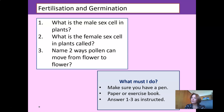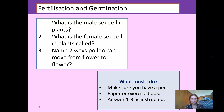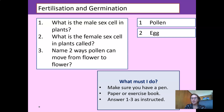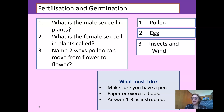Now, if you paid attention yesterday, these are easy questions for you to answer. Number one: the male sex cell in plants is called pollen, and the female sex cell is called the egg. Two ways that pollen can move from flower to flower — you should know more than two — are insects and wind. We also looked at birds in quite a bit of detail yesterday.